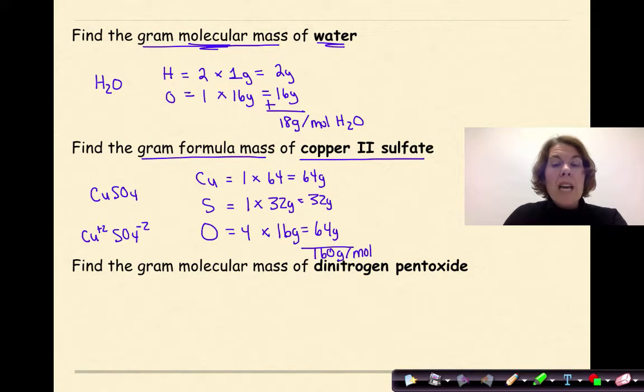For the last one, we have dinitrogen pentoxide, so N2O5. I'm going to write out my atoms here. So I have nitrogen and oxygen involved. When I look at my formula, I see that I have 2 nitrogens times 14, which is the atomic mass. So 2 times 14 is 28 grams. For oxygen, I have 5 oxygens times 16. So 5 times 16 is 80.